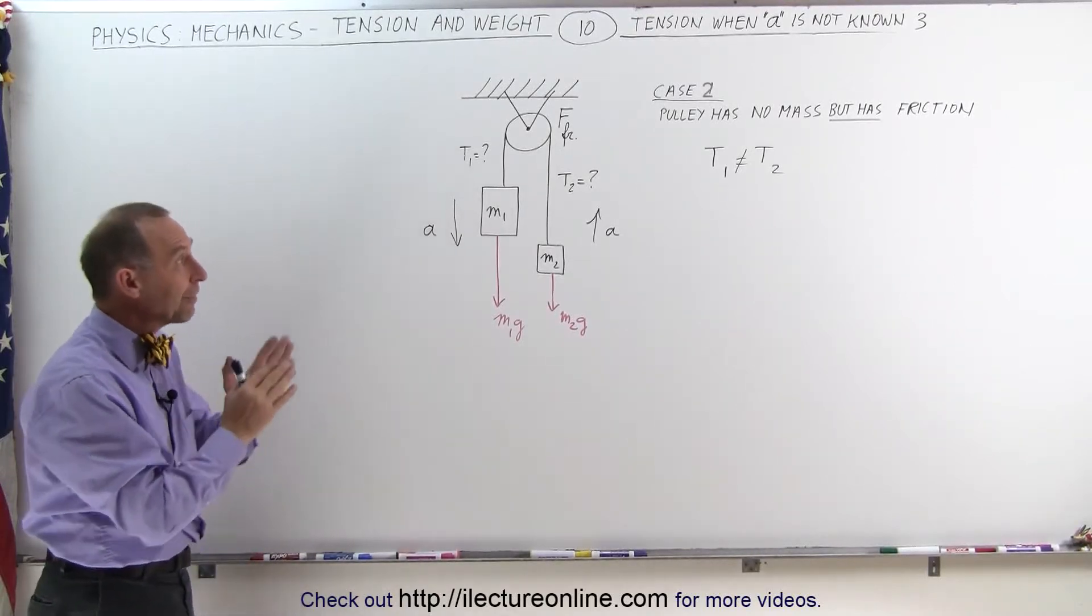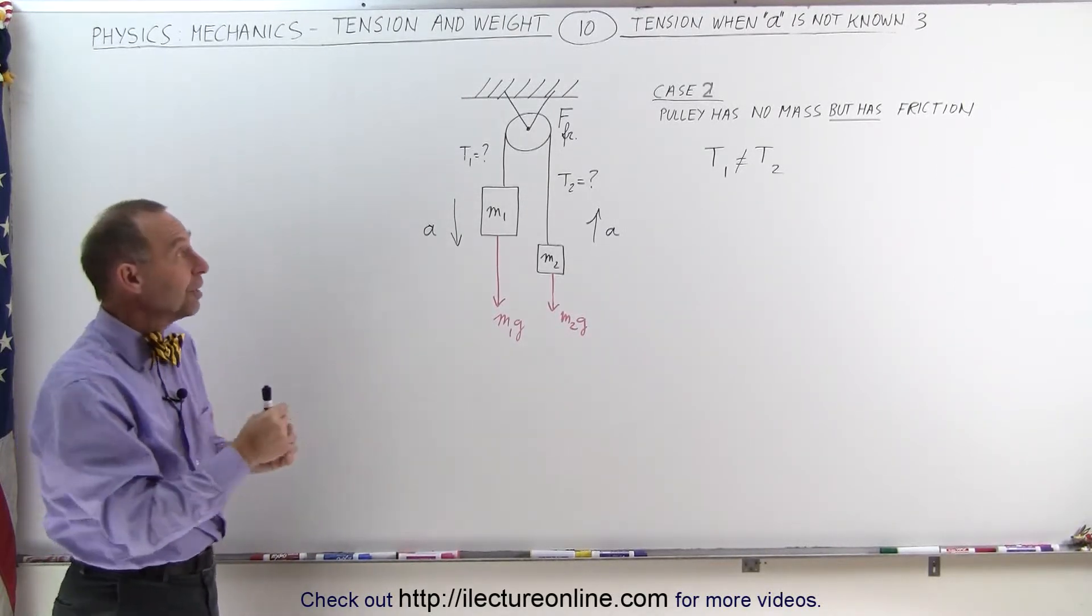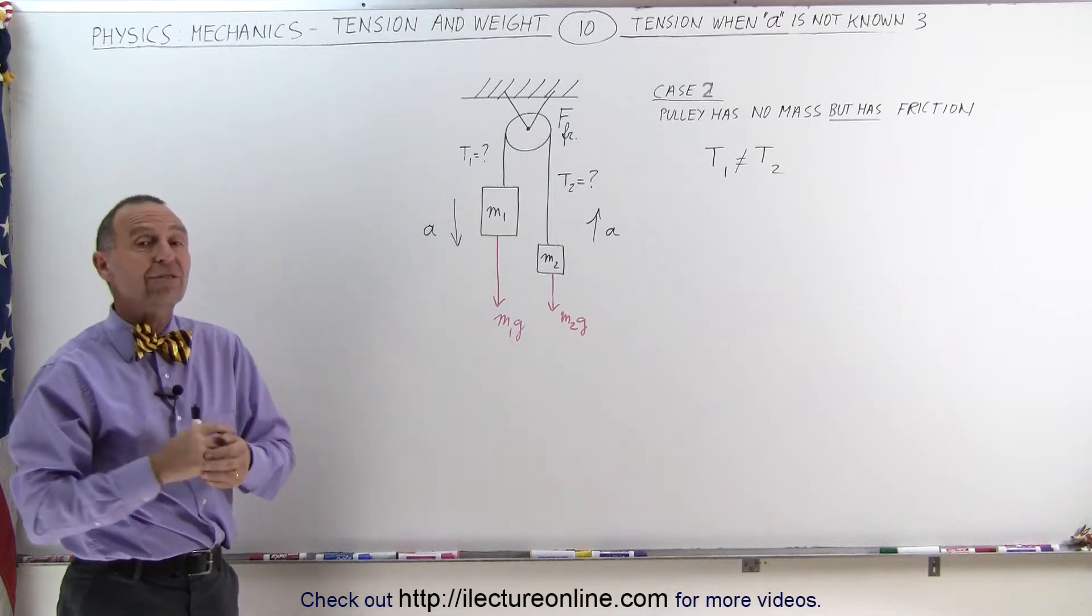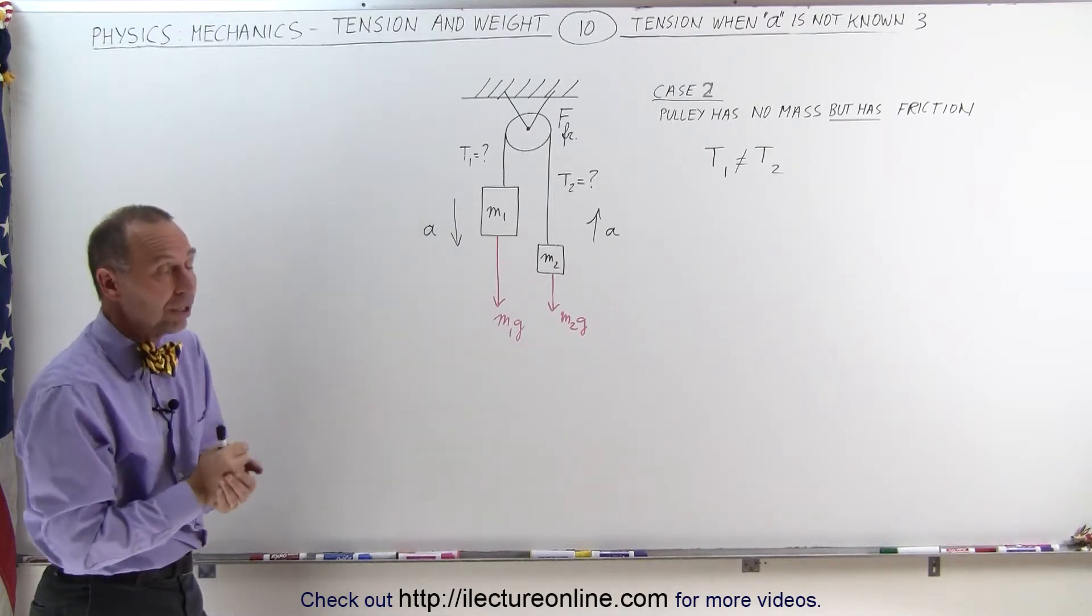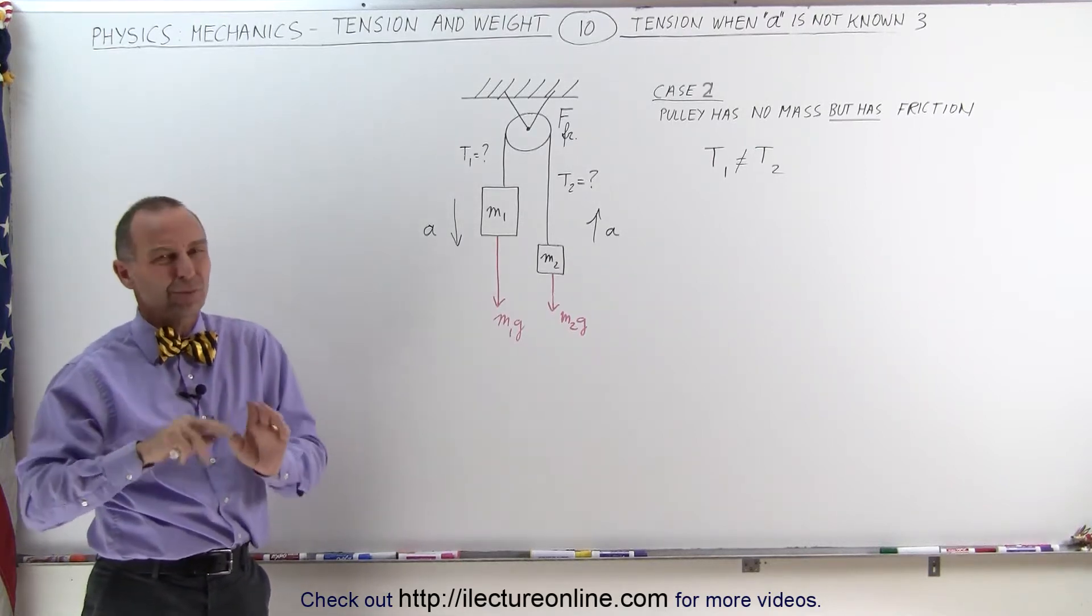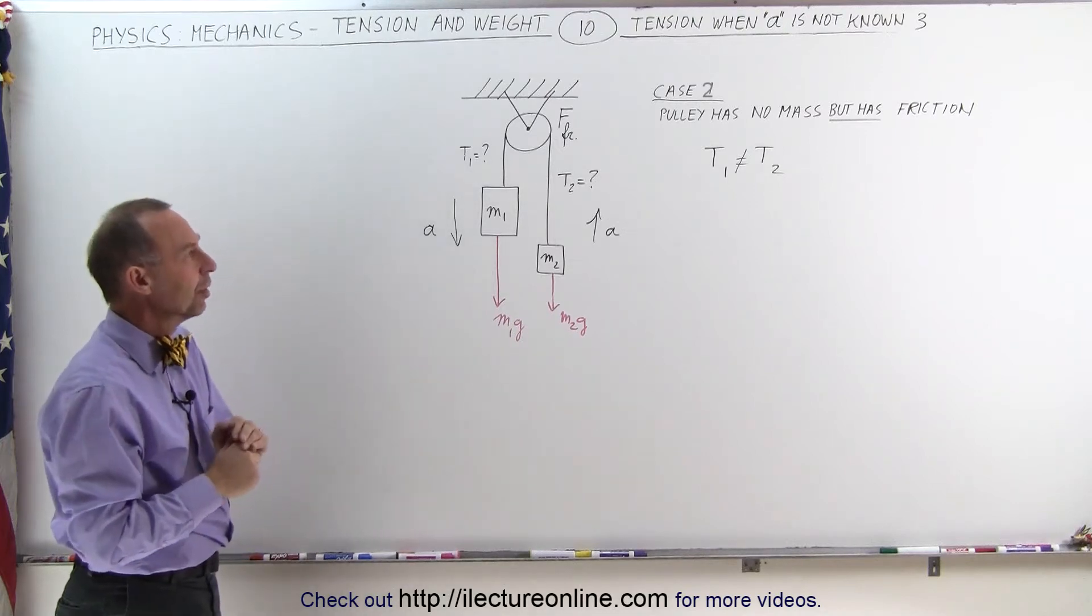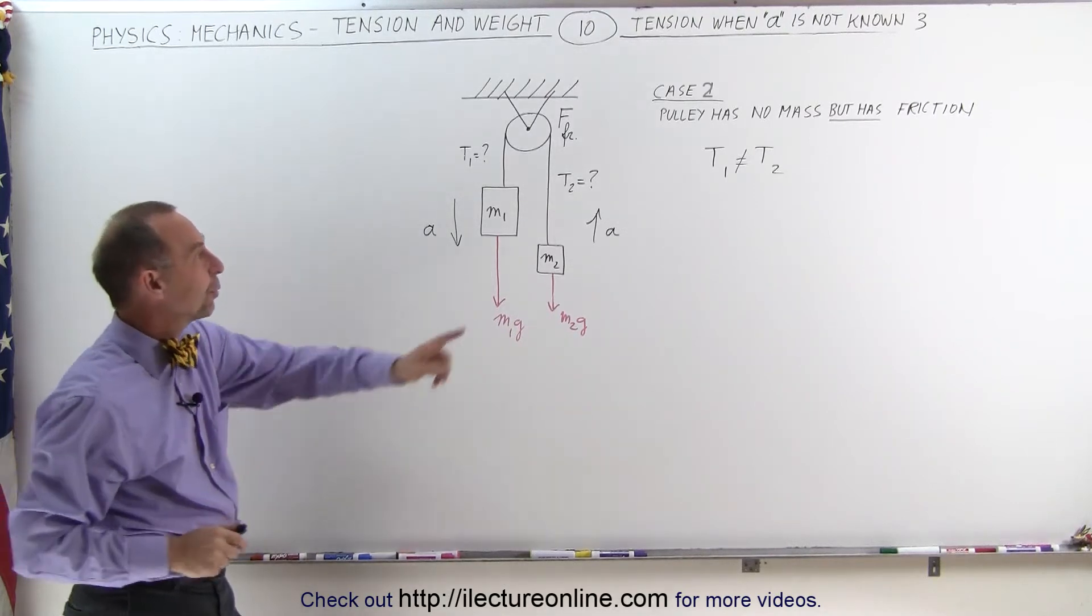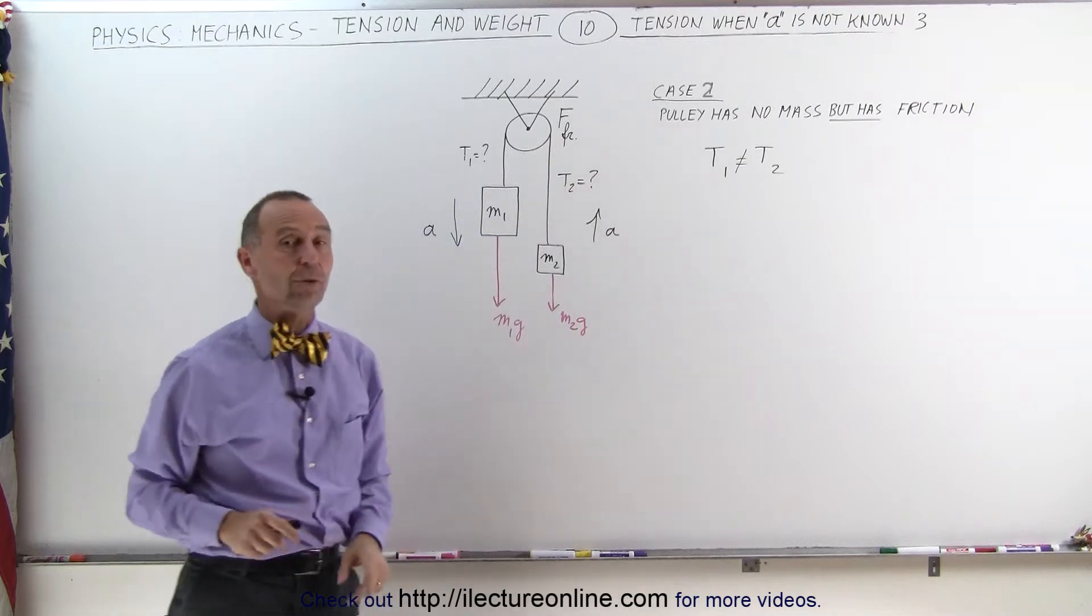Welcome to Electronline. Here we have the case—it's still an Atwood machine, but the pulley no longer is frictionless. It now has friction. We still assume it has no mass, which means it doesn't have moment of inertia, but it does have friction, so we do have to take into account the friction force.